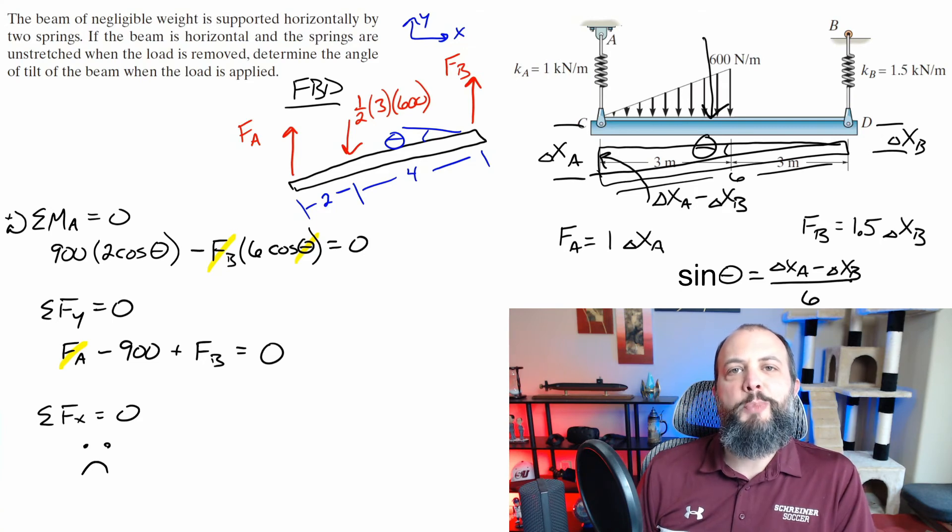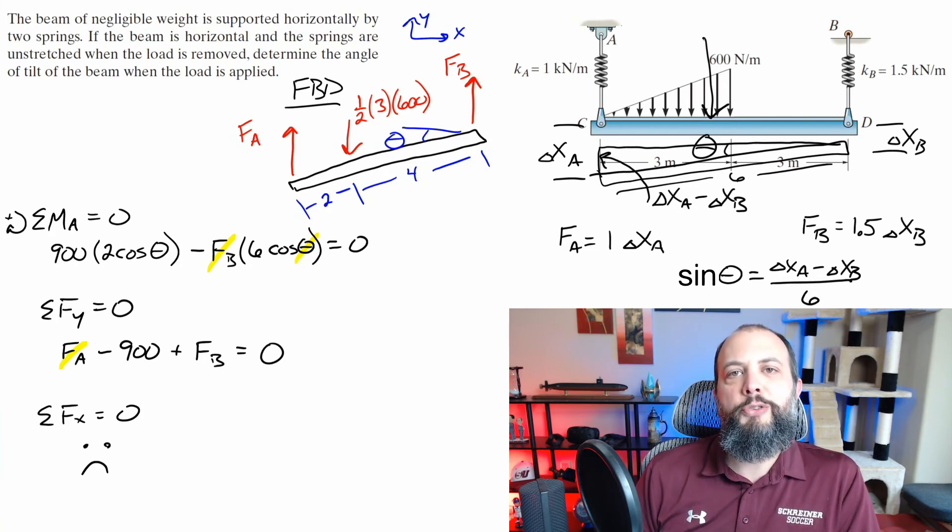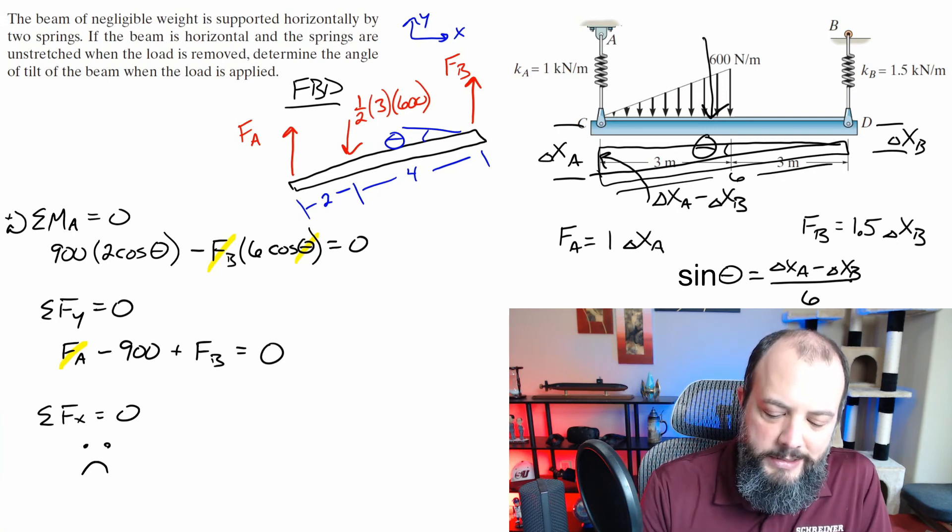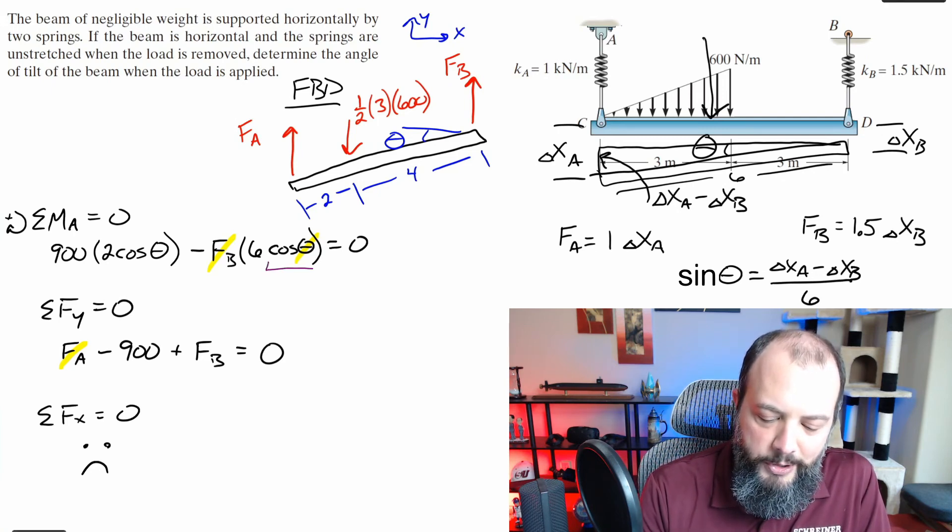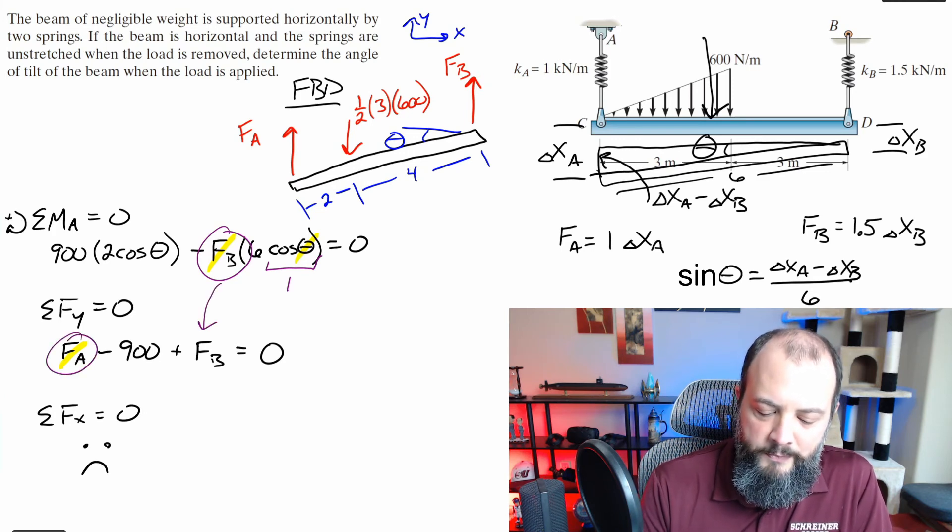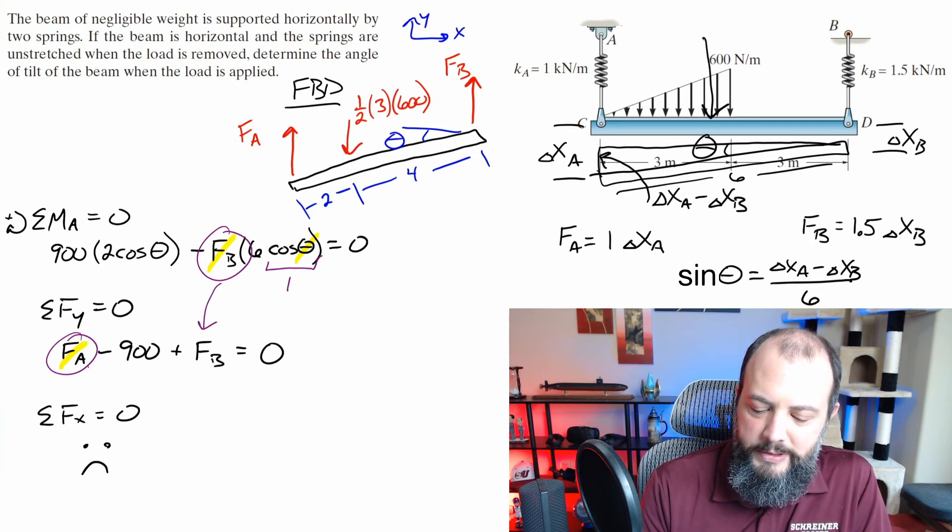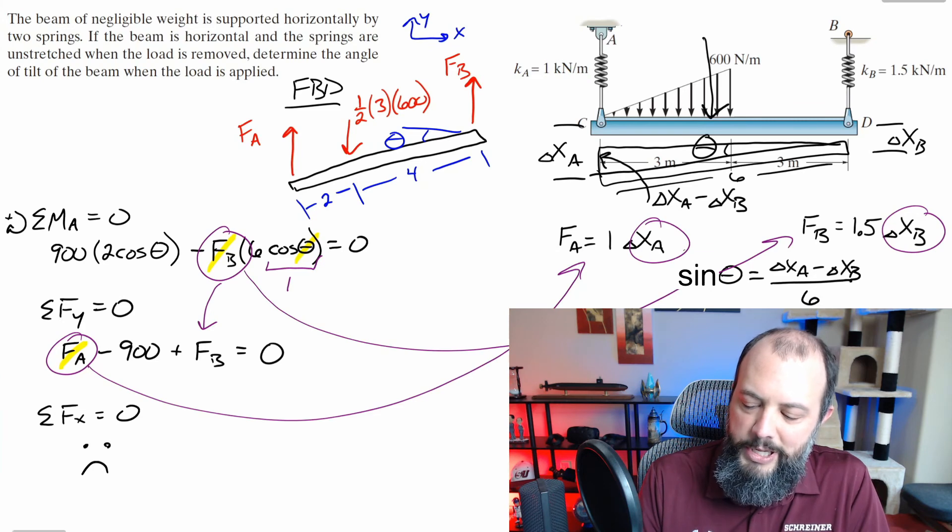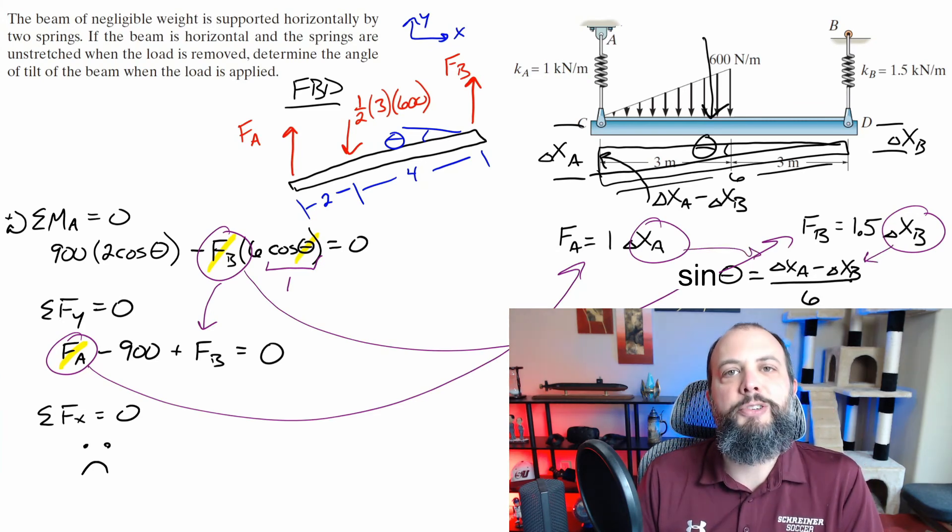There's really two ways to solve this. One is going to be to use an approximation and then the other is going to be to solve exactly. If you just want to find an approximation, you could assume that the angle is going to be very small. When you make the small angle approximation, you're assuming that cosine of theta is equal to one. And what that does is that removes this unknown from your moment equation and allows you to solve for FB directly. You can then plug that into your Y direction equation to solve for FA. And then you can solve both of those forces into your spring equations to solve for XA and XB. And then plug those into the angle in order to solve for theta as your final answer.